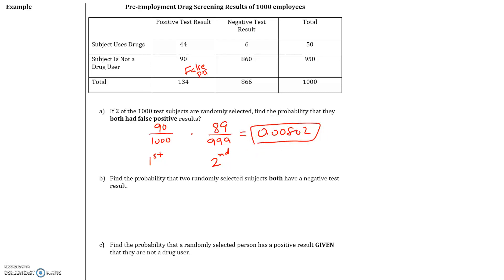Part B: find the probability that two randomly selected subjects both have a negative test result. Now we're looking at negative test results. How many people got a negative test result? We had 6 plus 860, for a total of 866 people who got a negative test result.